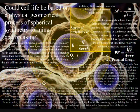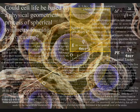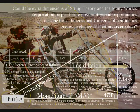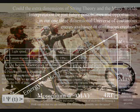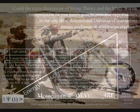It is because this theory uses the holographic principle that we only need three dimensions and one variable in the form of the continuum of time. The extra dimensions of string theory are just future possibilities and opportunities in our one three-dimensional universe of continuous creation.